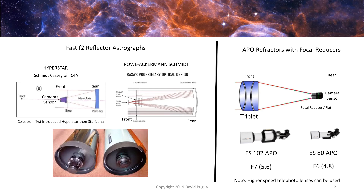Celestron recently introduced a new design that appears to be an improvement of the Hyperstar design. It works essentially similarly: in place of the Hyperstar, you have a built-in four-lens element group, an optical window, and the camera sensor screws onto the front of the telescope. It's an F2.2, so essentially they're about the same.